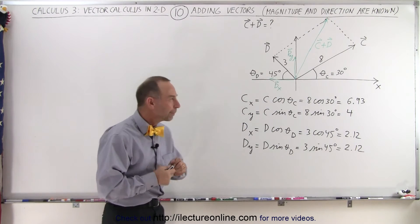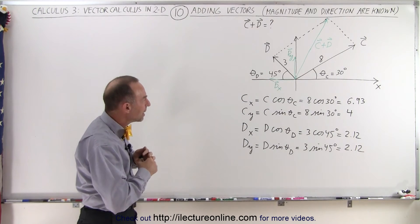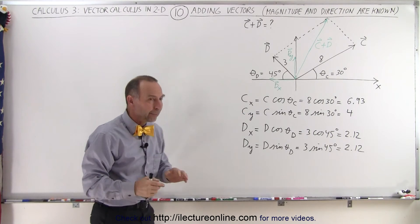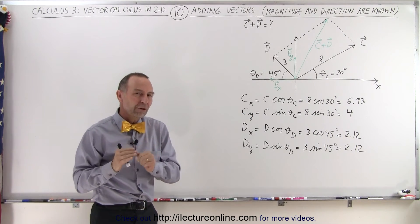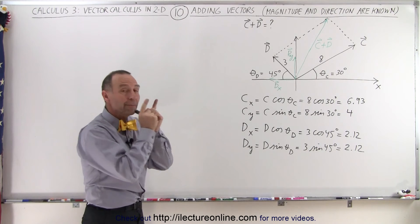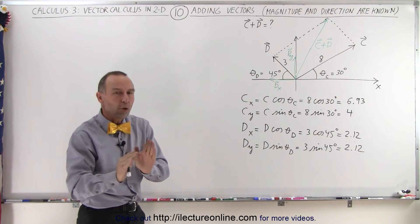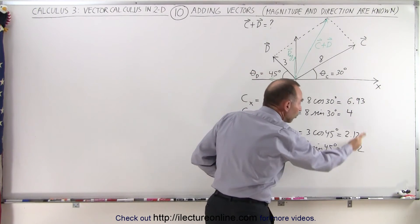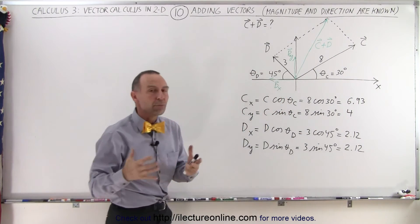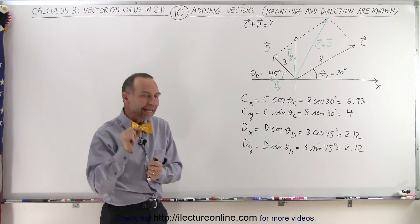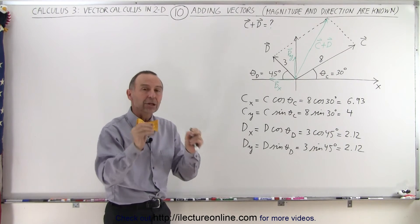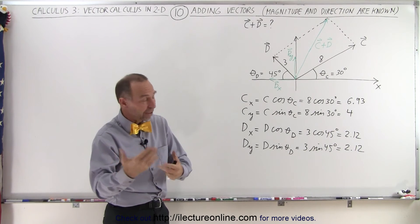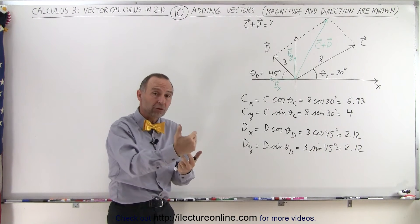Now you might be puzzled and ask: why is D sub x not a negative number, since it's pointing to the left? Well, it's pointed to the left so the direction is negative, but the magnitude of that component must be positive because no magnitudes can ever be negative. Since we're only finding the magnitudes of those components, they all must be positive. The negative comes in when we actually add the components together, because then they're vectors, and since the component points in the negative direction, we have to take that into account.